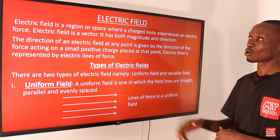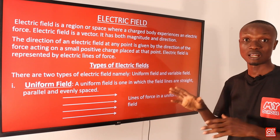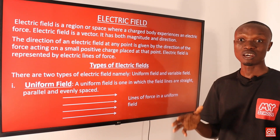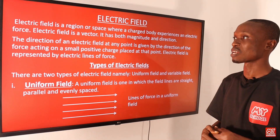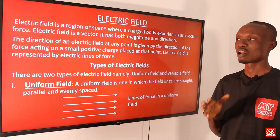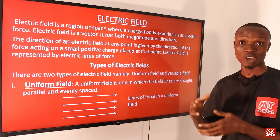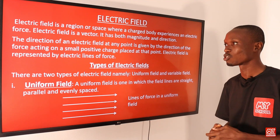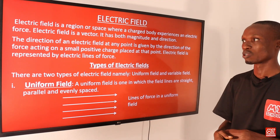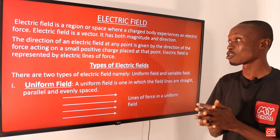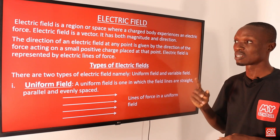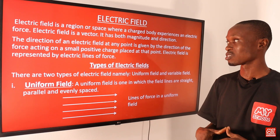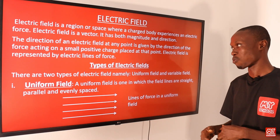In the first slide we are going to be defining what an electric field is. An electric field is a region or space where a charged body experiences an electric force. Electric field is a vector quantity, meaning that it has both magnitude and direction. The direction of an electric field at any point is given by the direction of the force acting on a small positive charge placed at that point.